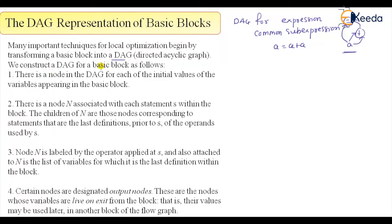We construct the DAG for the basic block as follows. There is a node in the DAG for each initial value of the variable appearing in the block — so for each variable there will be a node.